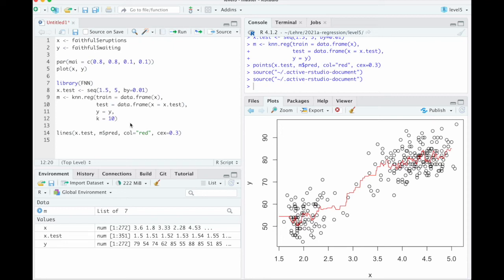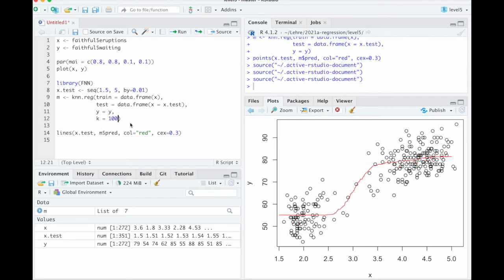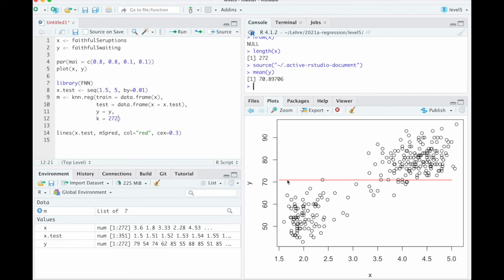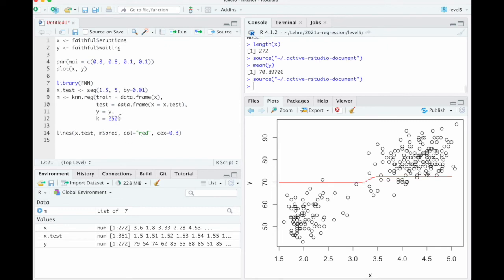And now we haven't learned yet how to actually choose k in a systematic way. Let's just try values. 100 is even smoother. The largest possible value would be the length of x, which is 272. Let's just try that. 272. That comes out as a straight line. And that makes sense because if we take the 272 nearest neighbors, that means all points. So there is no dependence on x anymore. That is just the average of the y. So let's try mean y is 70 and a bit. That's where the red line is.